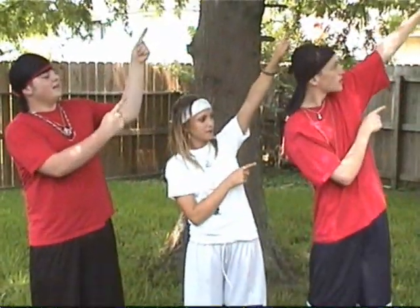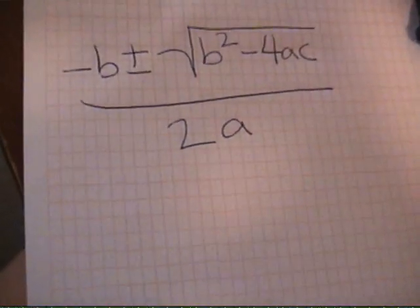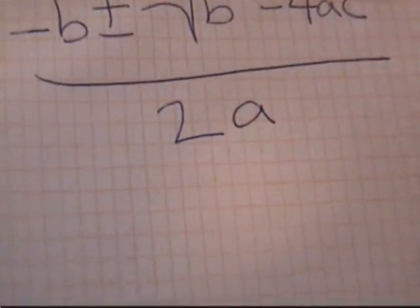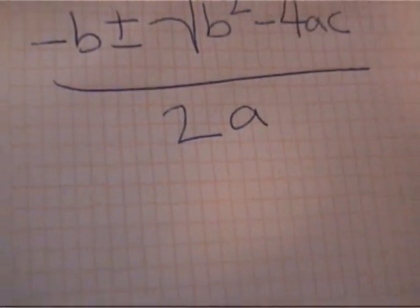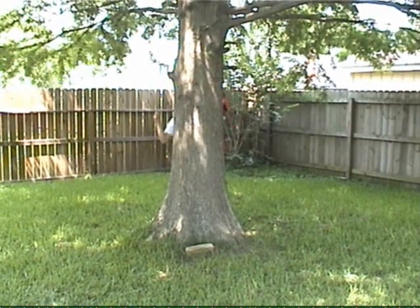A, B, C — they're the letters you need to make a quadratic equation easy. That's all. Negative B, plus or minus the square root of B squared minus 4AC, all over 2A.